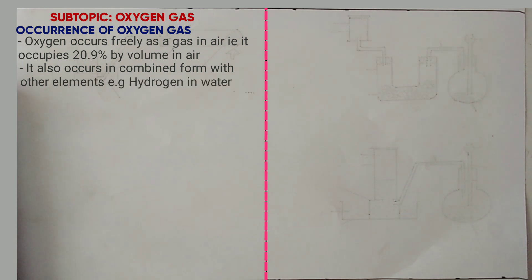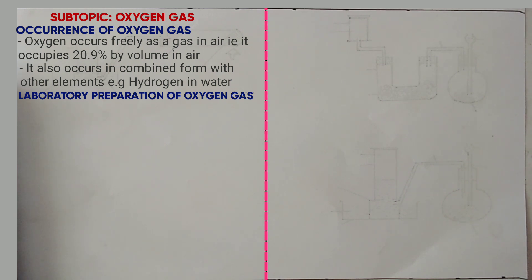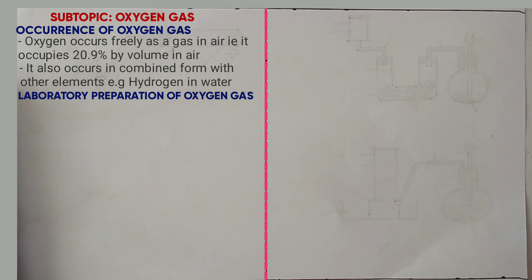Oxygen can be prepared in the laboratory and industrially by fractional distillation of liquid air. In the laboratory, the reagents used to prepare oxygen include: 1. Water and sodium peroxide. 2. Decomposition of hydrogen peroxide using manganese dioxide as a catalyst. 3. Action of heat on sodium nitrates, potassium nitrates, or potassium manganate 7.